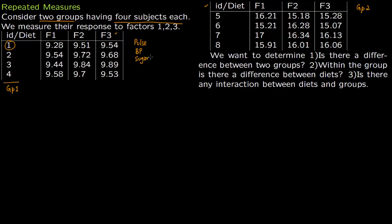We have made two groups because we a priori think they might be different — for example, group 1 as city population and group 2 as rural population. Once you have such data, we want to determine three things: first, is there a difference between the two groups? Second, within the group, is there a difference between diets — between factor 1, factor 2, and factor 3?